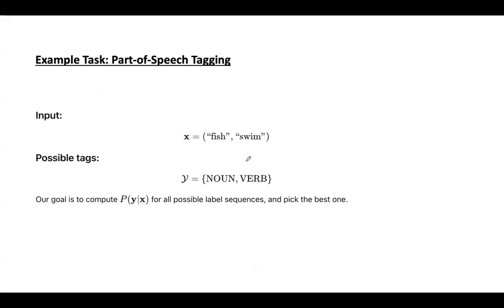Let us see one example. The task is to perform POS tagging. The input is fish, swim and the possible tags for these two words are noun and verb. Our goal is to compute probability of Y given X for all possible label sequences and pick the best one. We're trying to find the most likely sequence of labels for the words in the sentence.